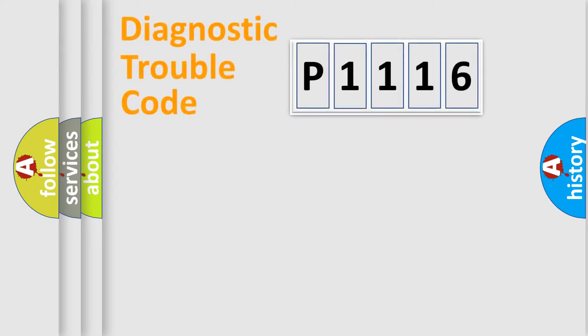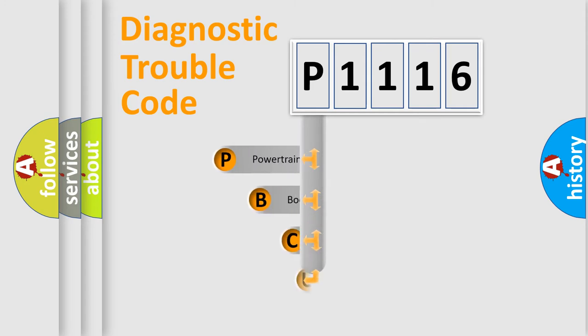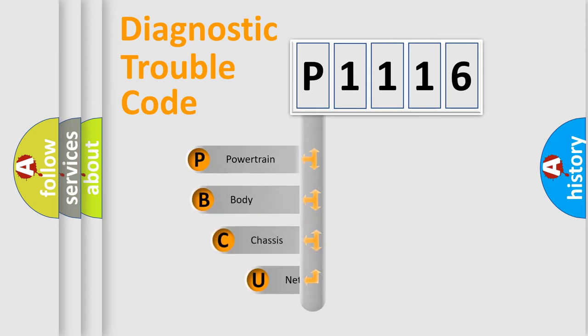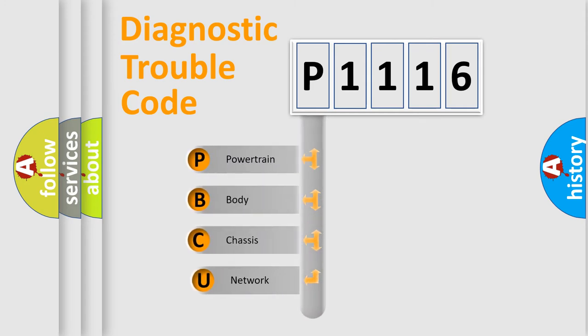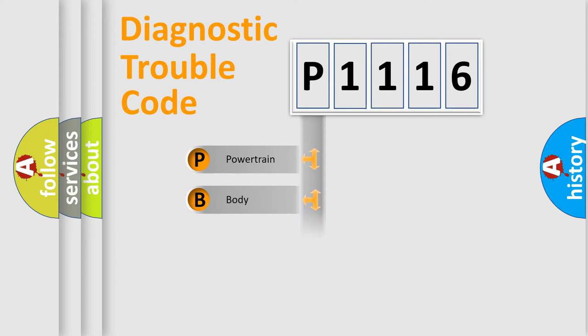First, let's look at the history of diagnostic fault code composition according to the OBD2 protocol, which is unified for all automakers since 2000. We divide the electrical system of an automobile into four basic units: Powertrain, Body, Chassis, and Network.